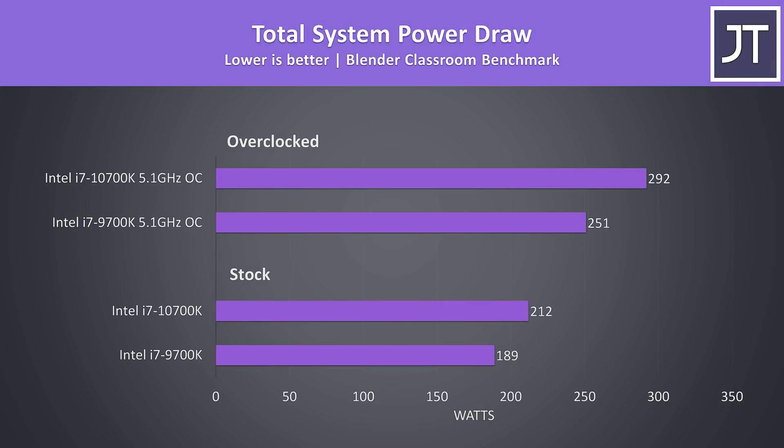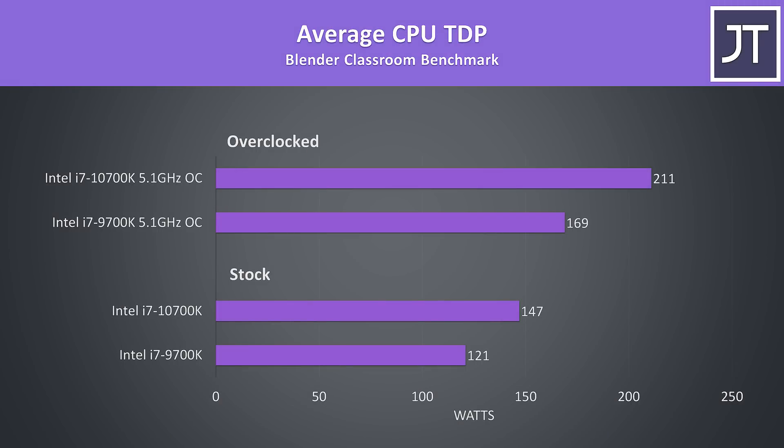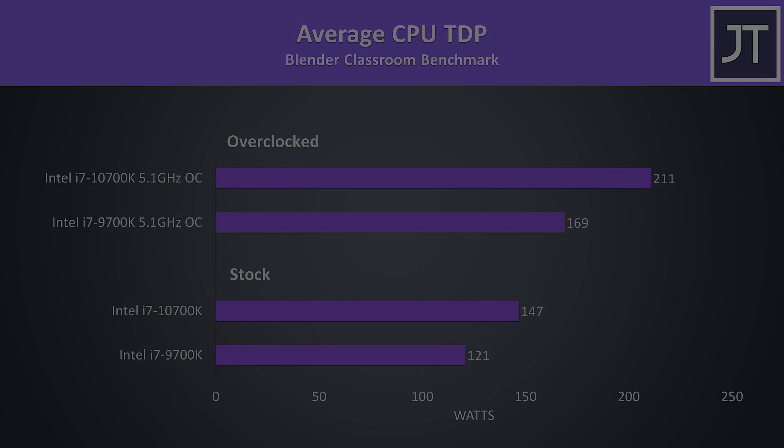When we look at the total system power draw from the wall with the Blender test running, the 10700K is using more power as expected. Once both are overclocked to the same speed, the 10th gen chip seems to need more power to sustain this. Here's the package power as reported by HWiNFO, and like we saw in the power draw just before, the gap widens with both overclocked.